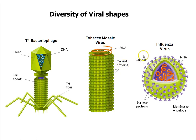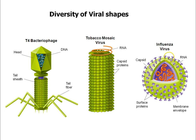And then we have the flu virus, also called influenza. They have a capsid, they have RNA, and they also steal a piece of your membrane, which makes it very difficult for your immune system to find it when they burst open your cells and cause infection. Between 10 and 100 million people were killed by the flu virus about 100 years ago in 1917.